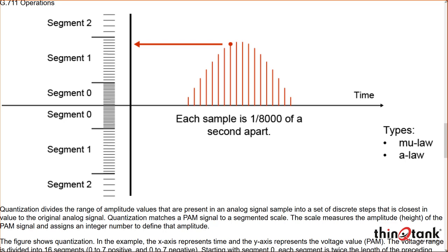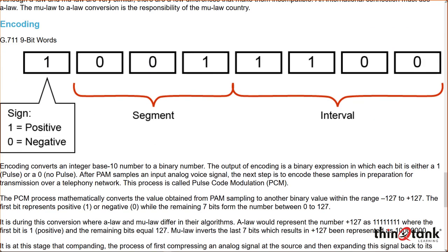A-law and Mu-law are audio compression schemes specifically defined in ITU-T G.711 that take 16-bit linear PCM data and move it down to 8 bits of logarithmic data. A-law is the standard used in Europe and the rest of the world; Mu-law is used in North America. They're very similar to each other, but there are a few differences that make them completely incompatible. An international connection using A-law requires a Mu-law to A-law conversion — and that's what a codec does.